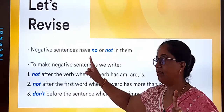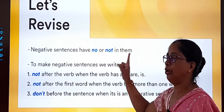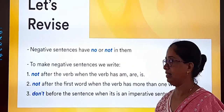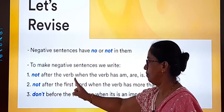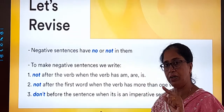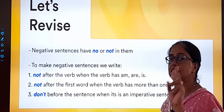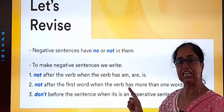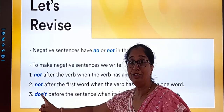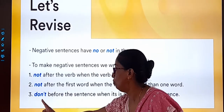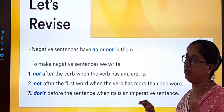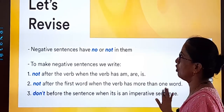Let's revise: Negative sentences have 'no' or 'not' in them. To make a negative sentence, write 'not' after the verb if it's a single verb, or after the first verb when there are two verbs. And 'don't' goes before the sentence only if it is an imperative order sentence.